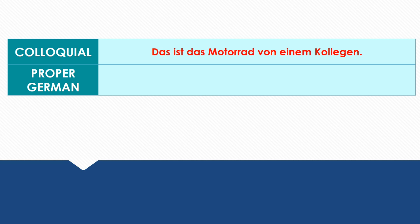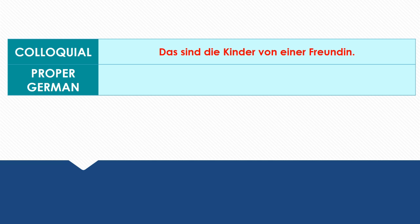Next sentence: 'Das ist das Motorrad von einem Kollegen' — this is colloquial German. In proper German using the genitive case you would say: 'Das ist das Motorrad eines Kollegen.' Next sentence: 'Das sind die Kinder von einer Freundin.' Using the genitive case you would say: 'Das sind die Kinder einer Freundin.'